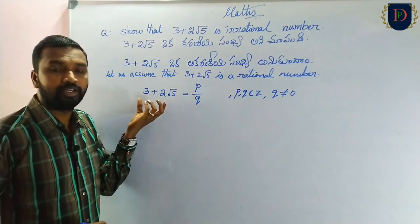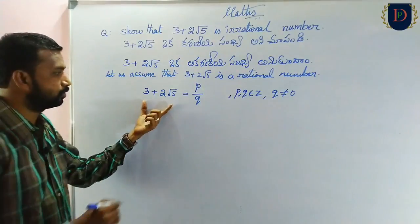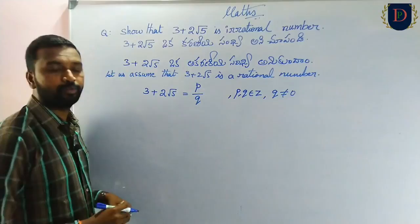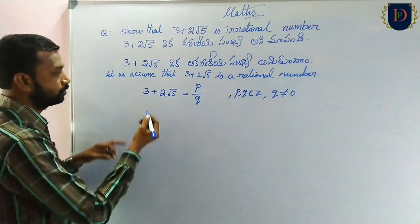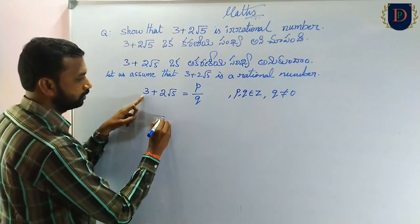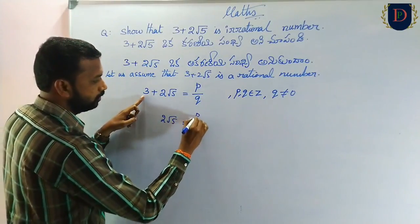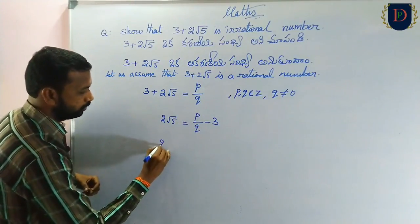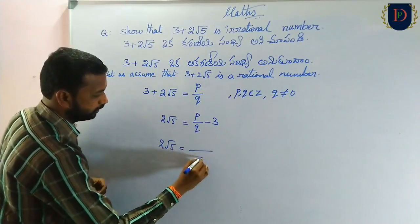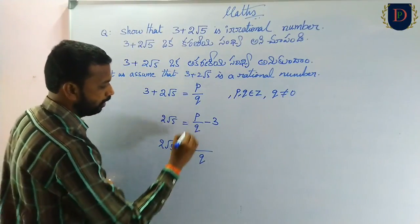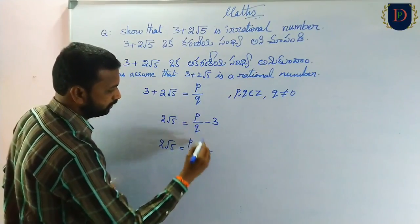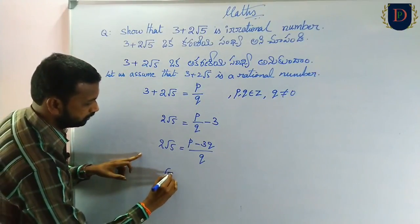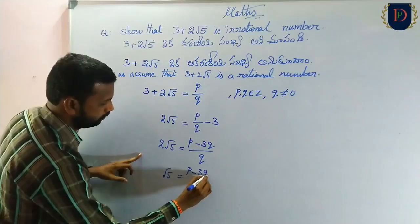So 3 plus 2 root 5 is equal to P by Q. We transpose: 2 root 5 equals P by Q minus 3. Taking Q as LCM: 2 root 5 equals P minus 3Q by Q. Dividing by 2: root 5 is equal to P minus 3Q by 2Q.